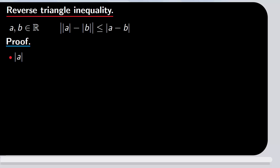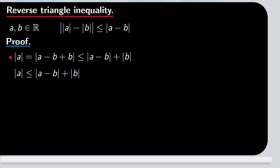For the proof we'll start from the absolute value of a, which is the same as the absolute value of a minus b plus b. Applying the triangle inequality, we have that this is less than or equal to the absolute value of a minus b plus the absolute value of b. Moving the absolute value of b to the other side by subtracting, we obtain that the absolute value of a minus the absolute value of b is less than or equal to the absolute value of a minus b.